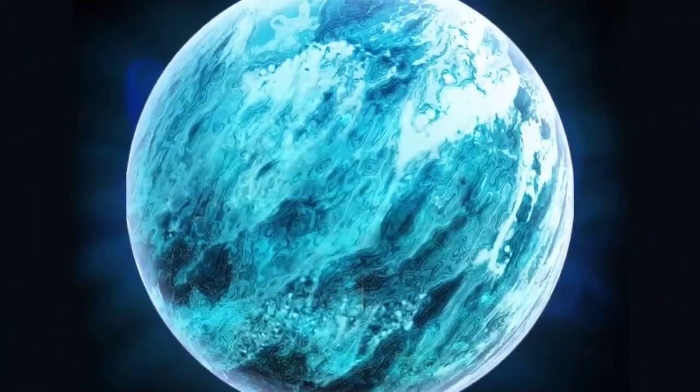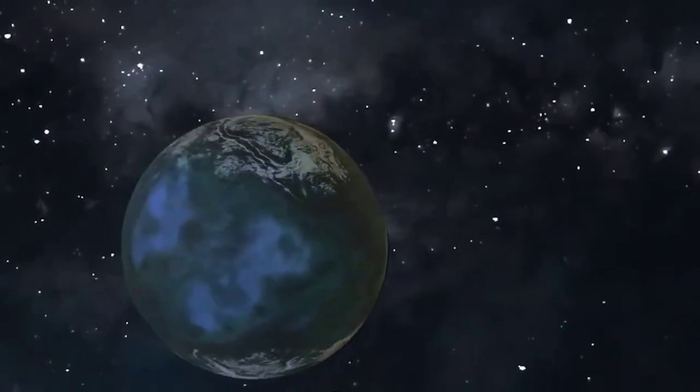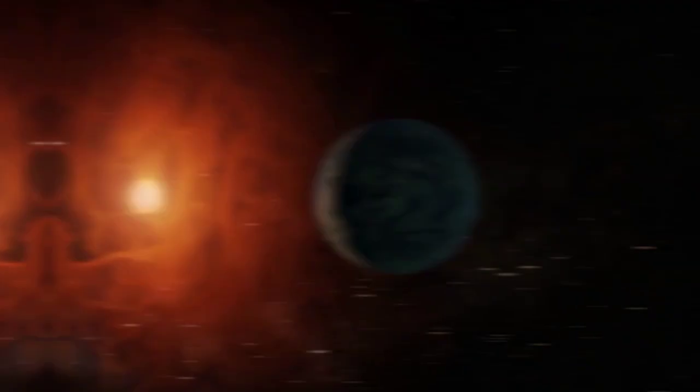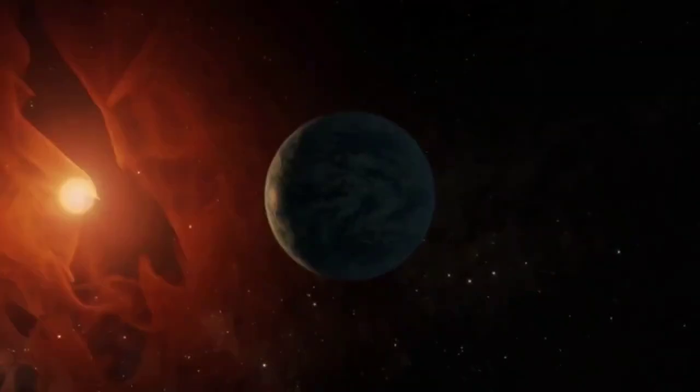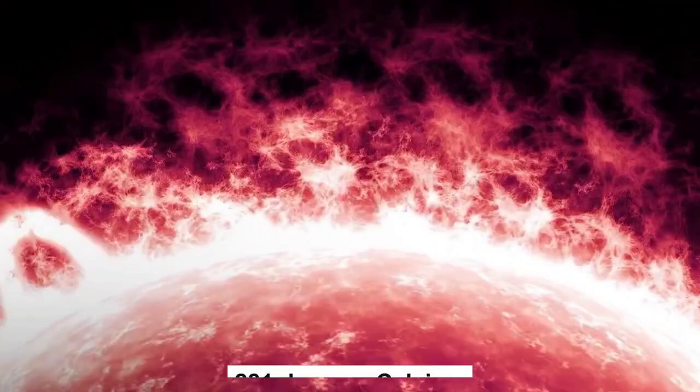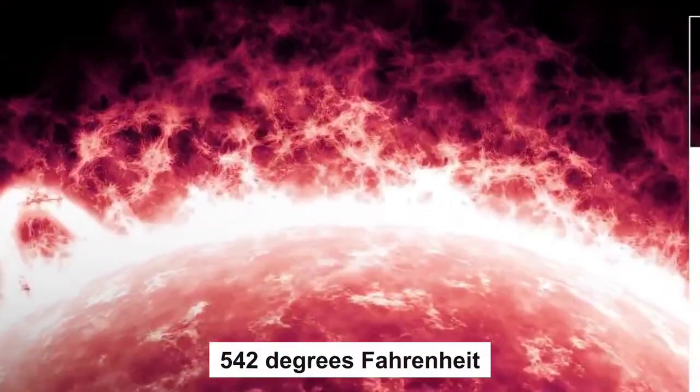Gliese 1214b orbits its own star, a low-mass M-type star, very closely, completing one orbit every 1.58 days. Gliese 1214b's proximity to its host star has caused it to have a very high surface temperature, estimated to be around 281 degrees Celsius, or 542 degrees Fahrenheit.